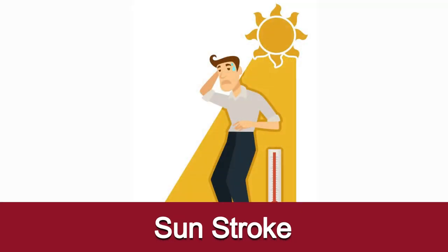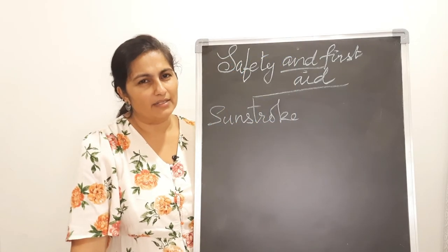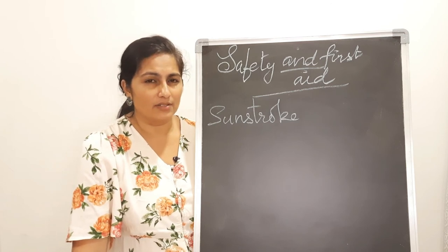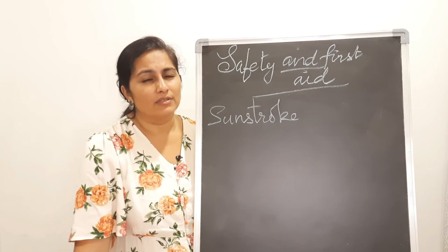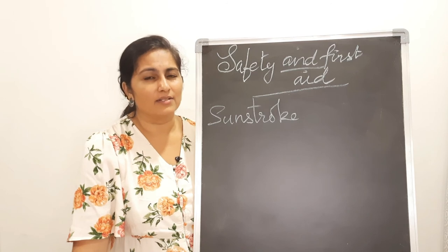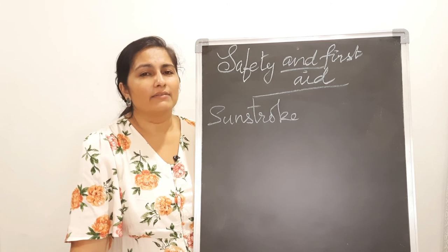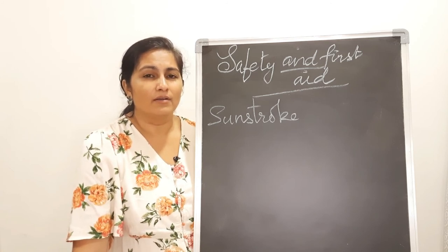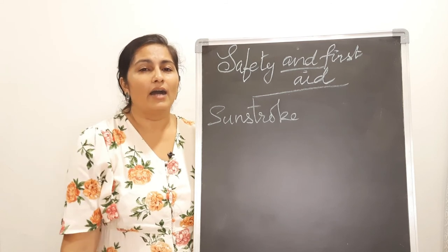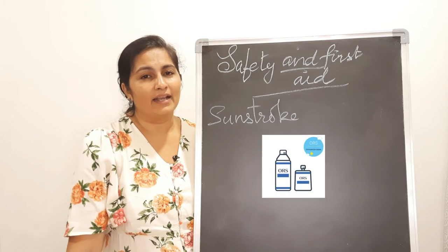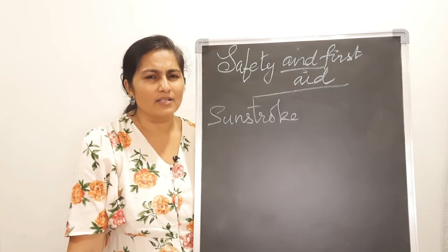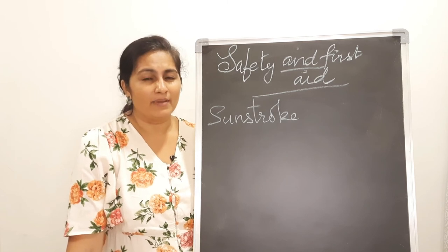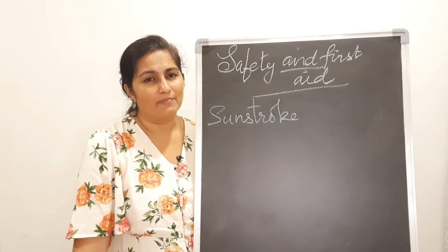Sunstroke is also an emergency — people have lost their lives due to dehydration from prolonged exposure to strong sunlight. First aid: immediately shift the person to a cooler place under a tree, fan, or shade; give them cold water to drink; apply cold compresses on their body and an ice pack on their forehead; and give them oral rehydration solution — a glass of water with a spoon of sugar and a pinch of salt — to help balance electrolytes and rehydrate the body.